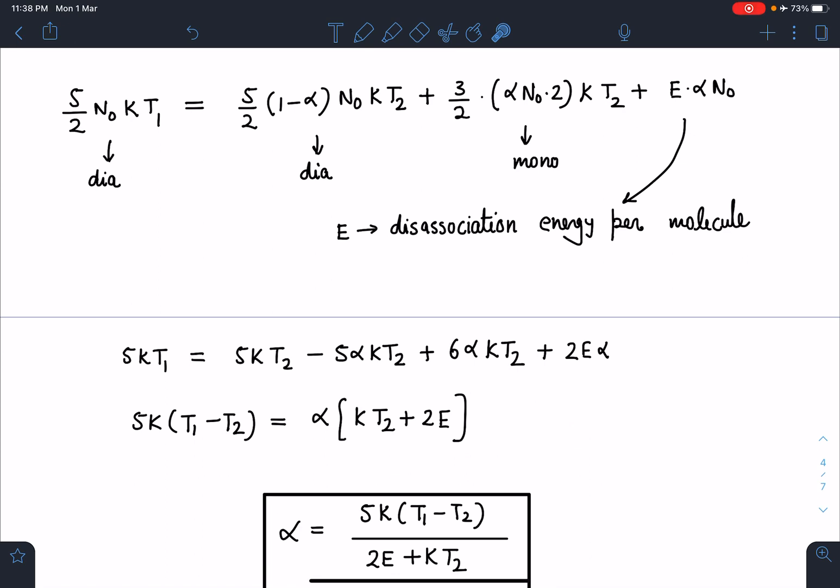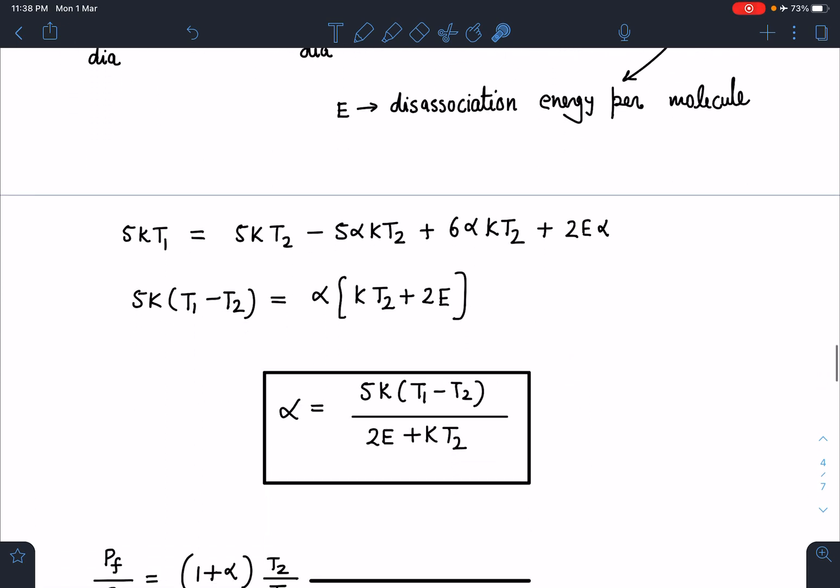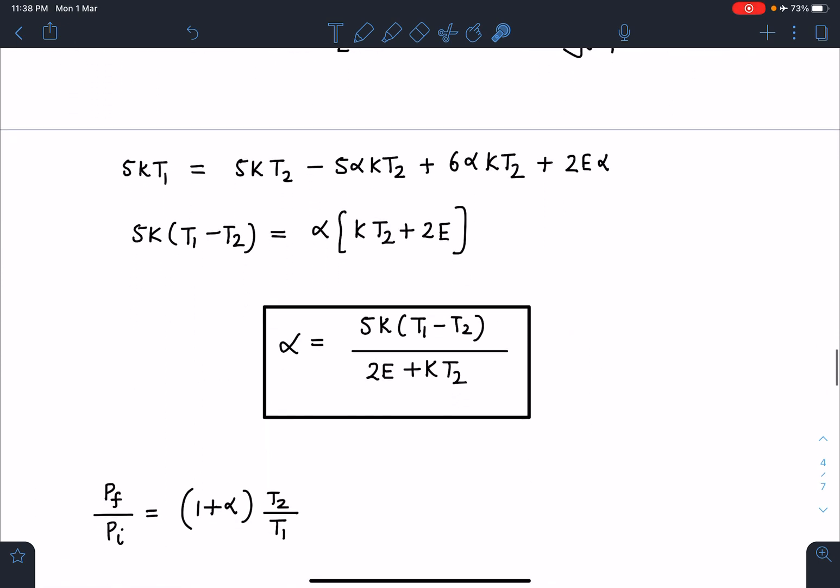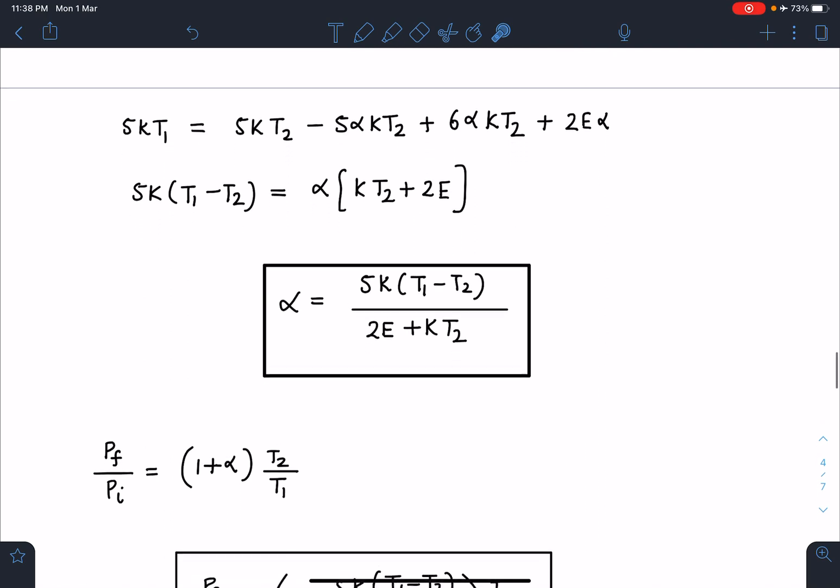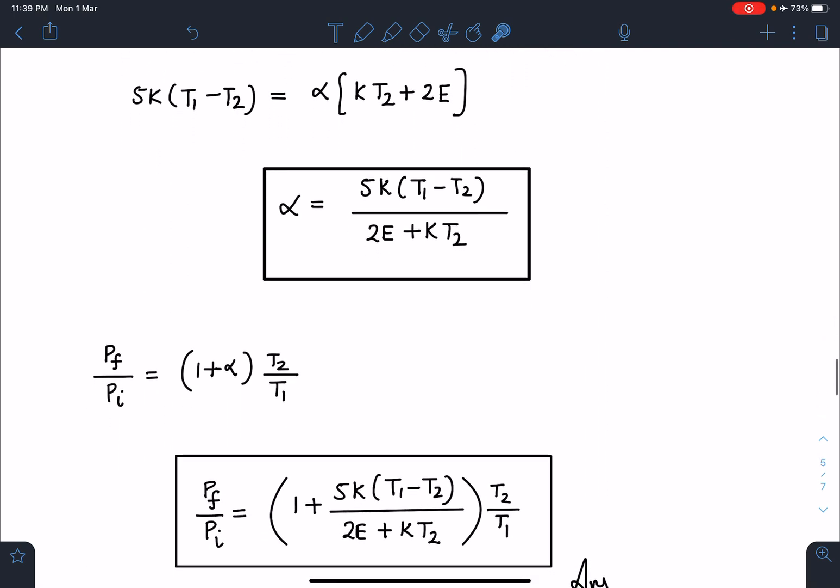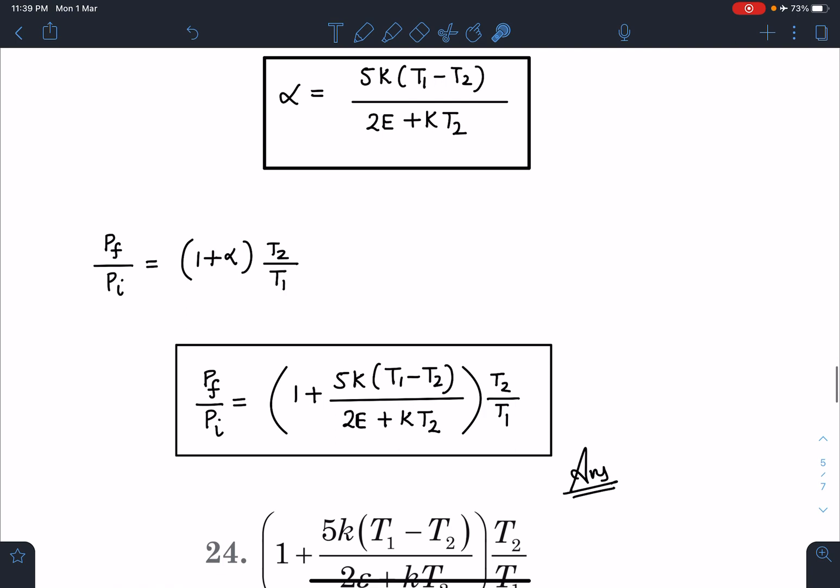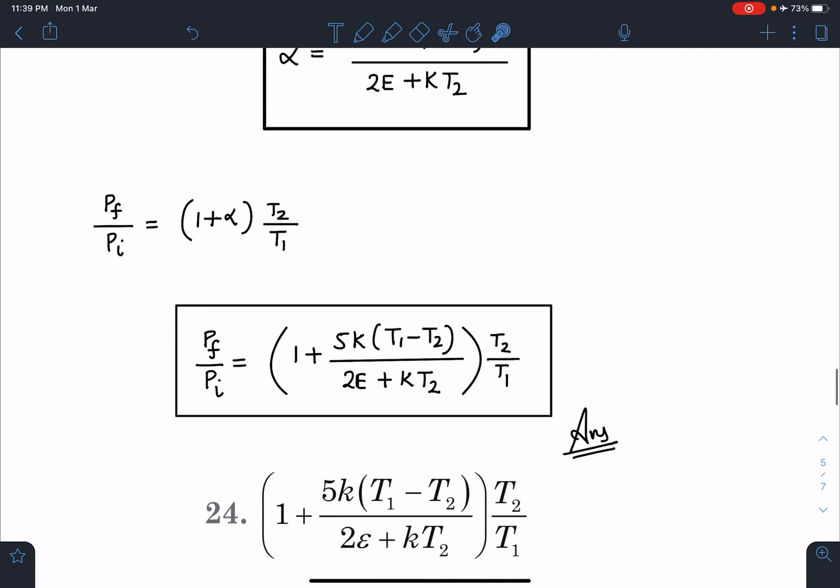Here you can see P_final/P_initial we have already evaluated as (1+α)T₂/T₁. When I substitute the value, you are going to get P_final/P_initial = (1 + 5k(T₁-T₂)/(2E+kT₂))T₂/T₁. This is going to be the final answer for this problem.